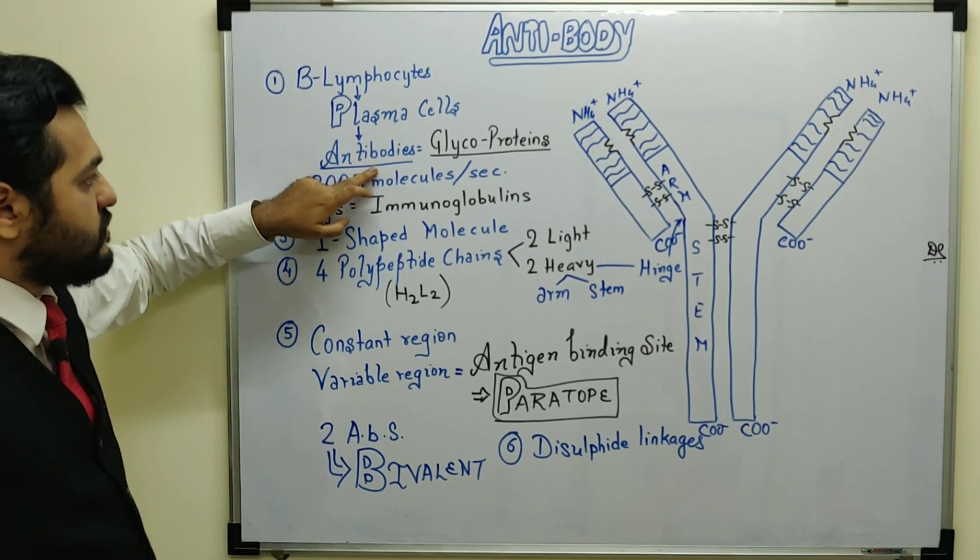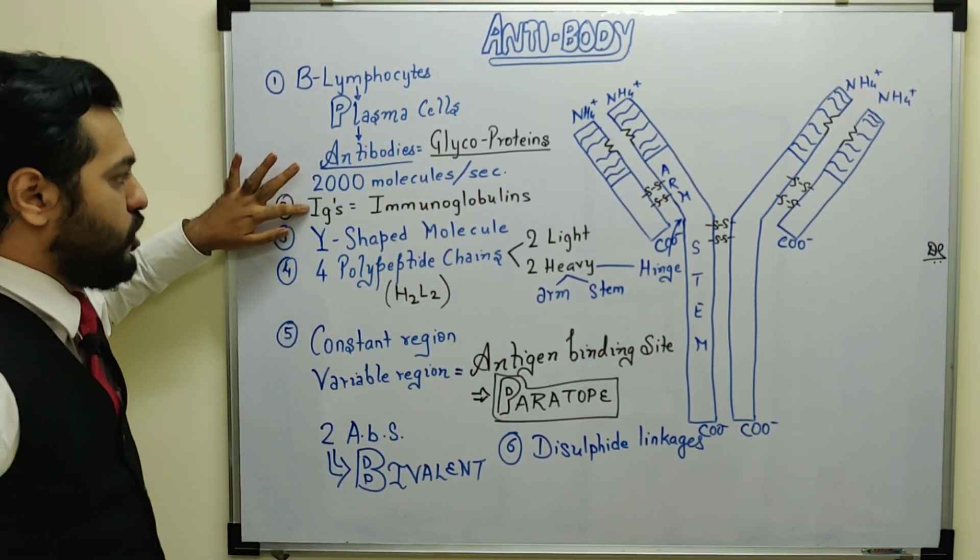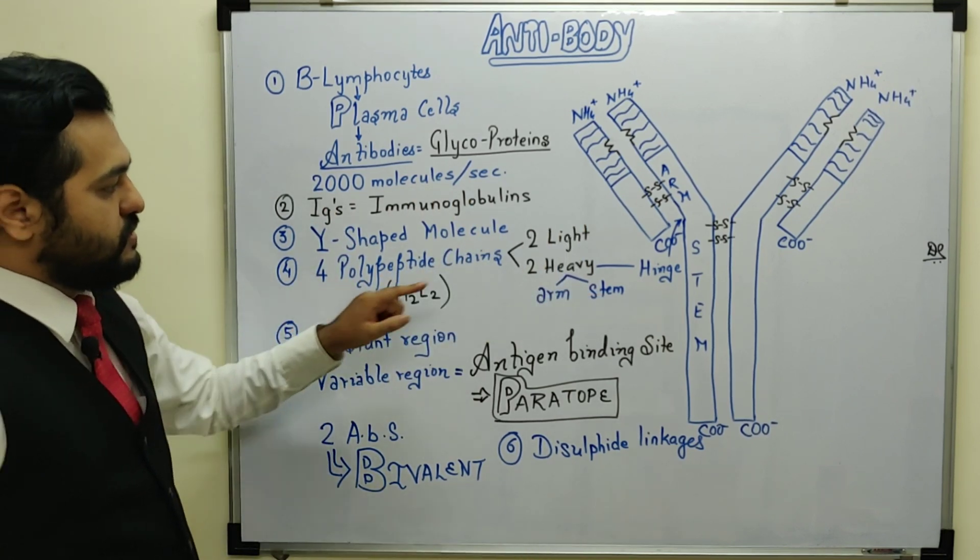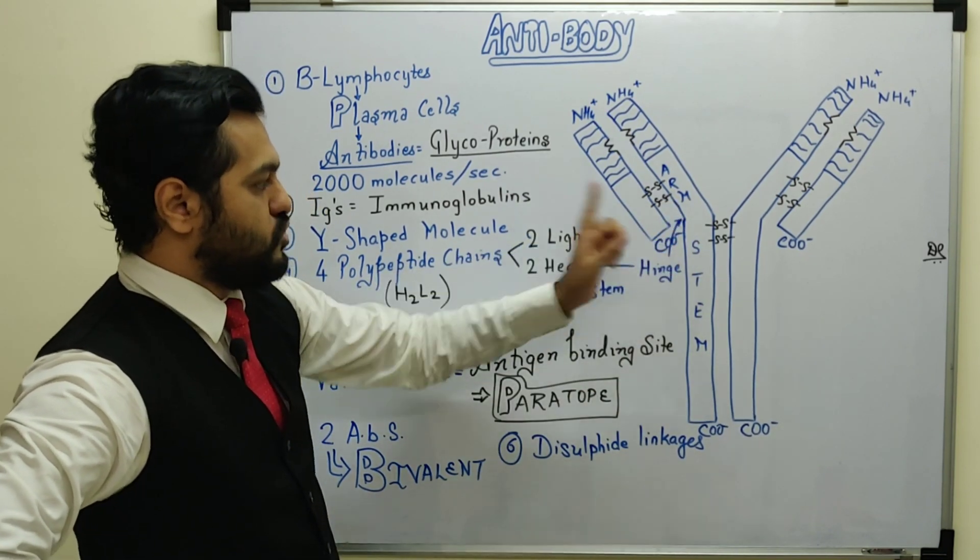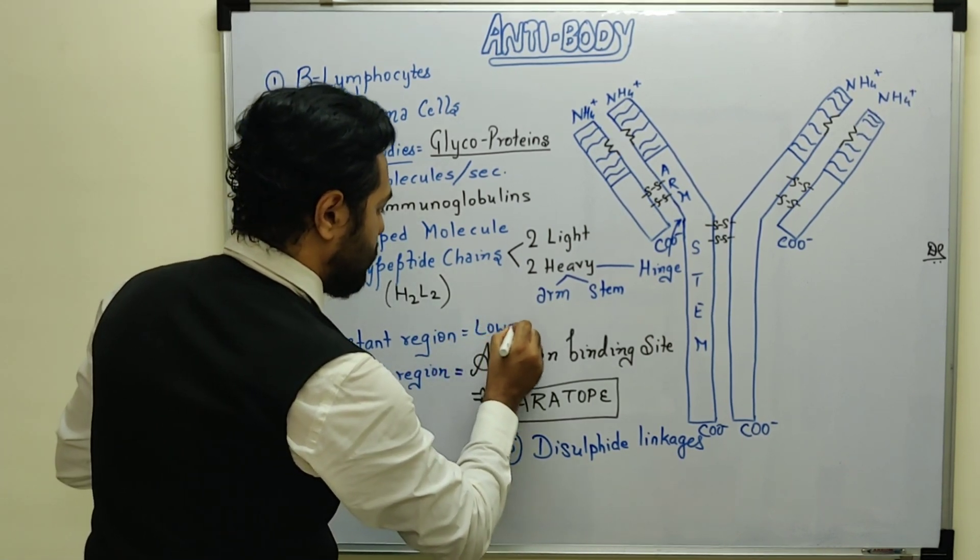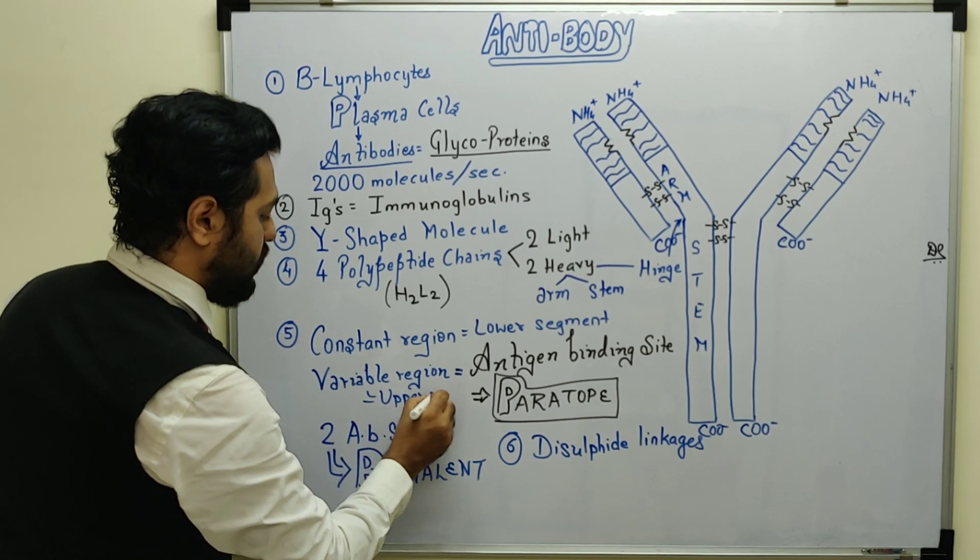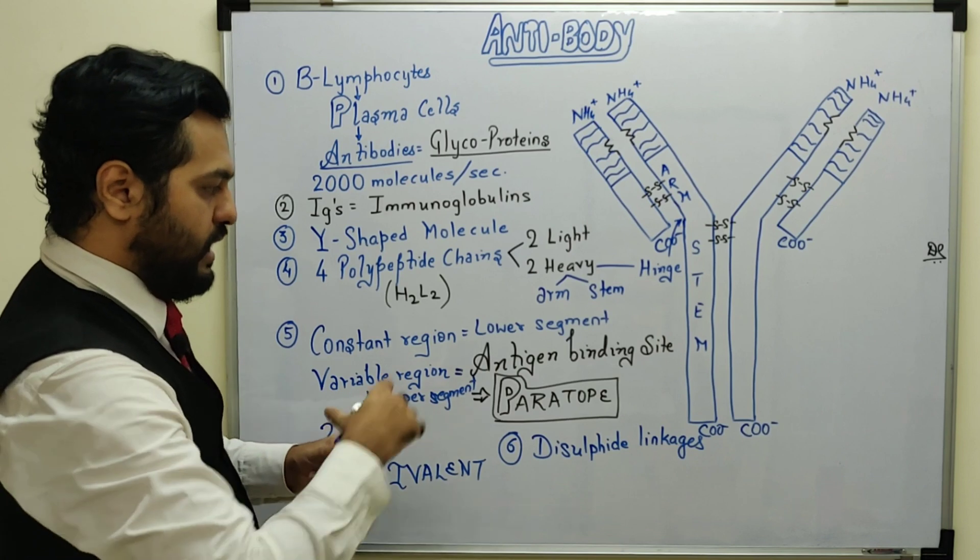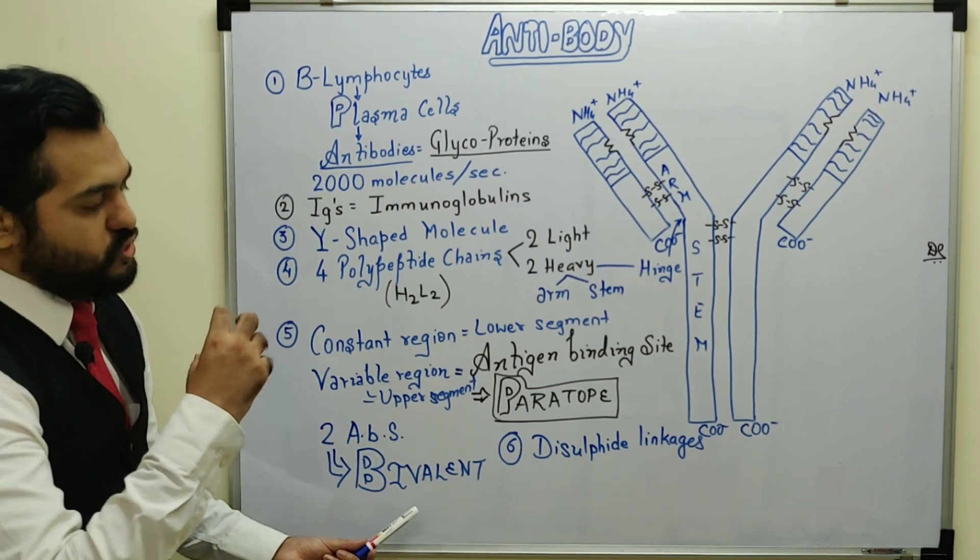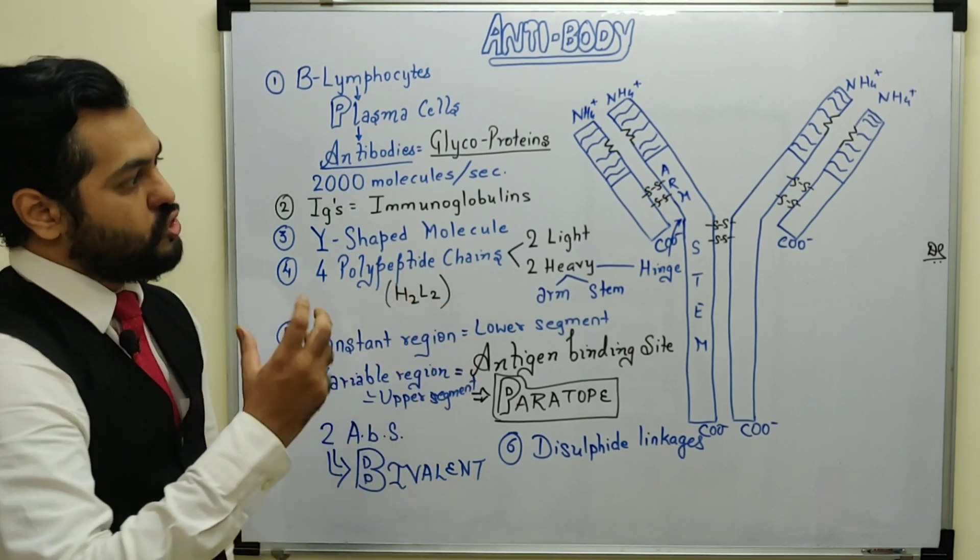So this whole structure is the antibody where B lymphocytes differentiate into plasma cells because of antigenic stimulus, secreting antibodies at 2000 molecules per second. Antibodies are glycoprotein defense molecules, also known as immunoglobulins. The structure is Y-shaped with four polypeptide chains - two light, two heavy (H2L2). There is a stem, arm, and hinge. The lower segment is the constant region whereas the upper segment has the variable region.